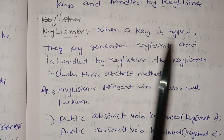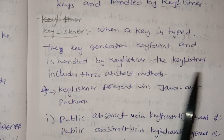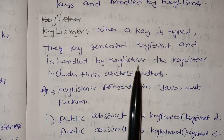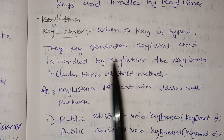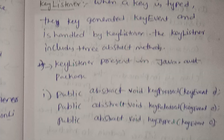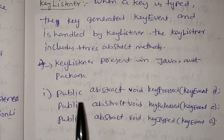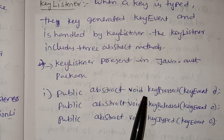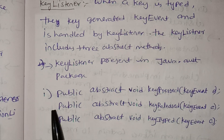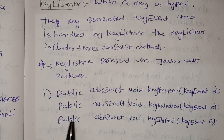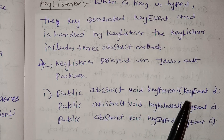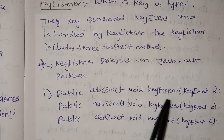Key events are handled by the KeyListener interface, which includes three abstract methods: public abstract void keyPressed(KeyEvent), public abstract void keyReleased(KeyEvent), and public abstract void keyTyped(KeyEvent) — covering key press, release, and typed actions.